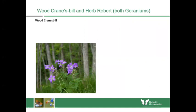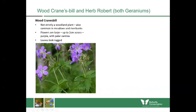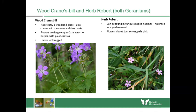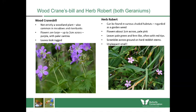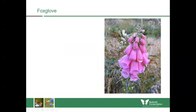Moving to geraniums — the wood cranesbill is found in meadows and riverbanks with large purpley-blue flowers up to two centimetres across with pale centres and ragged leaves. A much smaller plant still in the geranium family is herb robert, which you might have seen in your garden as a weed. It has small white or pink flowers only up to one centimetre across, pale green fern-like leaves often with red tips, scrambling across ground on hard reddish stems, with deep red outer flower cases covered in white hairs.